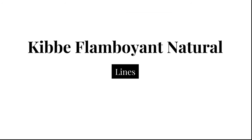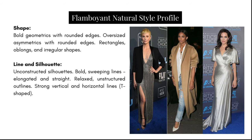Now let's discuss Flamboyant Natural lines. Shape: bold geometrics with rounded edges, oversized asymmetrics with rounded edges, rectangles, oblongs, and irregular shapes. The line and silhouette should be unconstructed, bold sweeping lines, elongated and straight, relaxed with a strong vertical and strong horizontal — maintaining that T silhouette is very important for this type.